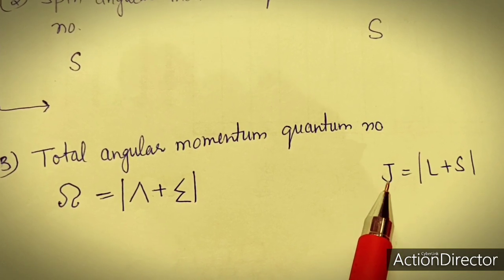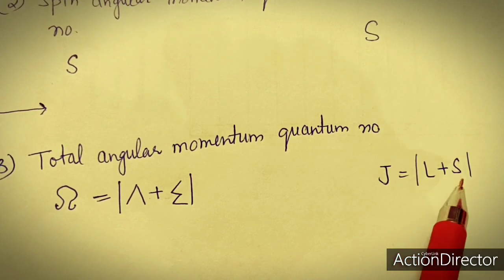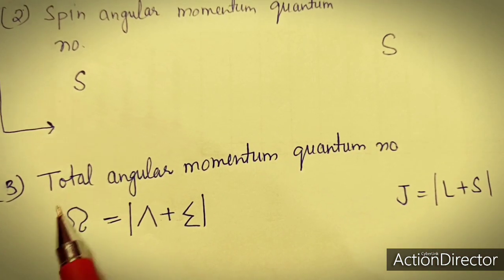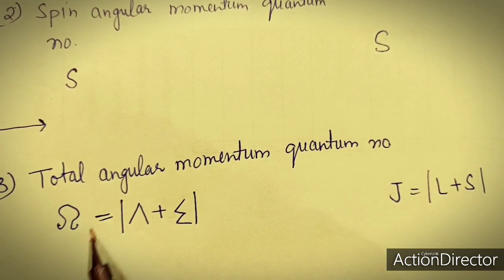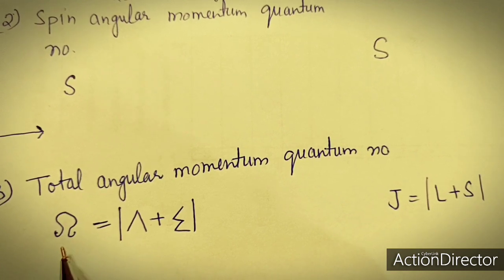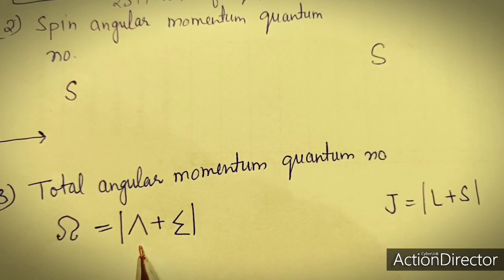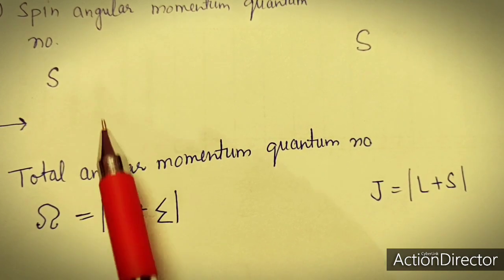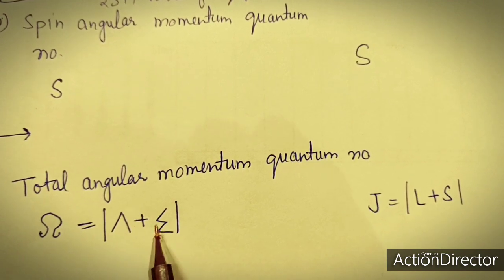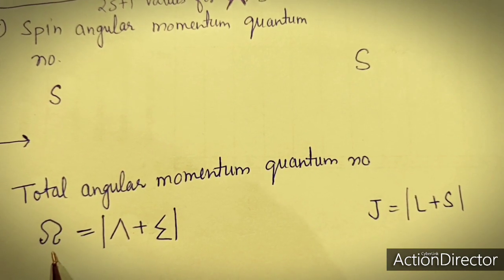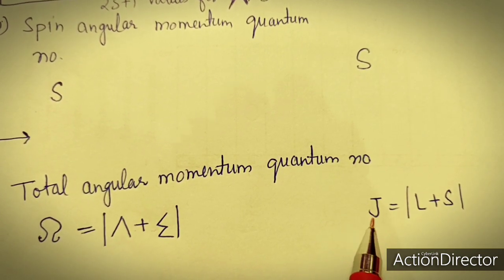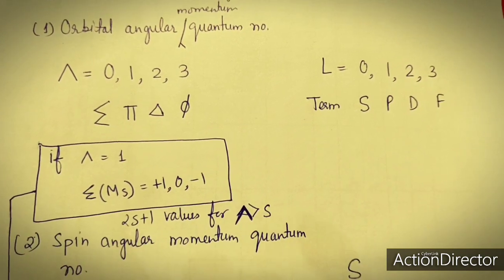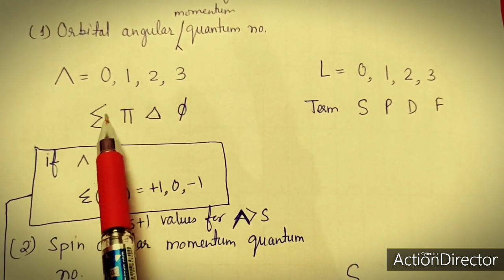The third quantum number in atomic terms was J, the total angular quantum number, with values from L+S to L−S. In diatomic molecules, this total angular momentum quantum number is represented by omega, where omega equals lambda plus S (sigma). This is similar to J in atomic terms.